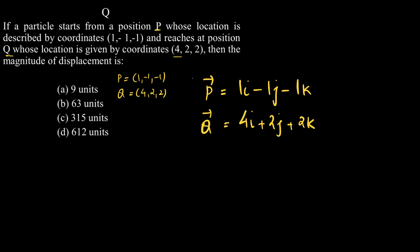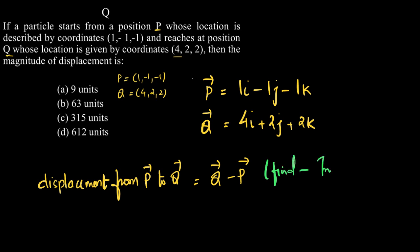Now, the displacement from P to Q would be given by vector Q minus vector P. Why? Very basic, because this will be the final position vector minus the initial position vector.